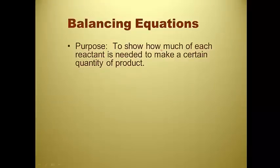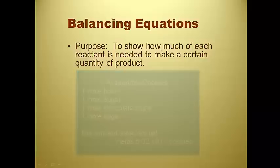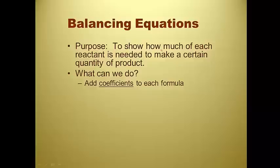Alright, so the purpose of balancing equations is to show how much of each reactant is needed to make a certain quantity of product. You can kind of think about this as being analogous to making cookies, having a recipe for cookies. A recipe for cookies would tell you how much flour, how many eggs, how much sugar, how many chocolate chips you need. And it would also tell you how many cookies it yields when it's done. A chemical reaction is very similar. What can we do to make sure that this is balanced out? Well, we can add coefficients like I just talked about in the previous slide, and these coefficients wind up acting as a multiplier.